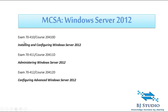Once you clear all three papers — 7410, 7411, and 7412 — that is when you are qualified as a Microsoft Certified Server Associate for Windows Server 2012.